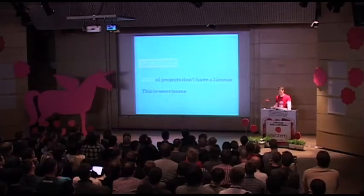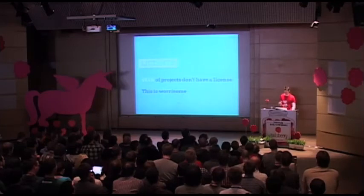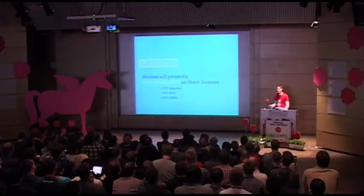And finally, the paperwork: 47% of projects don't have a license, which is terrible. By default, code is copyrighted by the essence of you making it. If you push something to GitHub, this presents a big barrier to a lot of big companies who say you cannot use a project unless it has an open source license. Of those that did have licenses, 44% chose MIT, 2.2% Apache, 1.1% GPL, and 0.5% LGPL. I will make no statements based on these numbers, because license flame wars are — no.